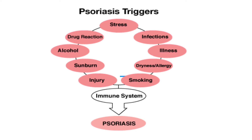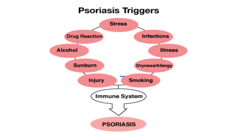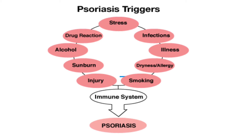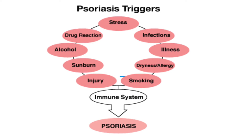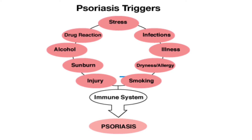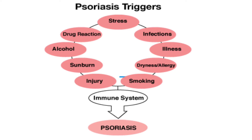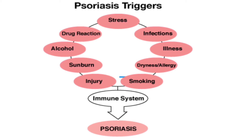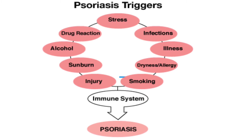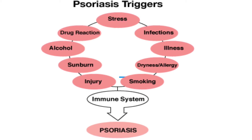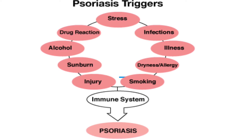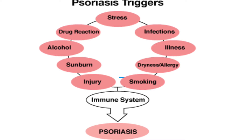Here's a quick diagram to recap some of the triggers of psoriasis. If you notice, they're all related in that they all trigger an immune response from the immune system of the person, and this immune system response then causes the symptomatic psoriasis.